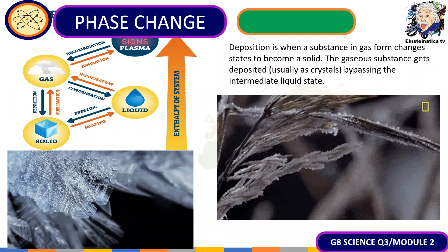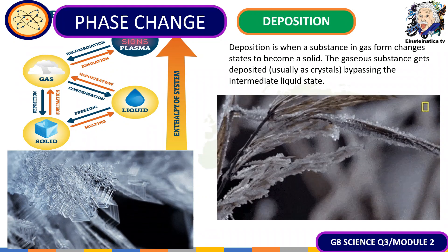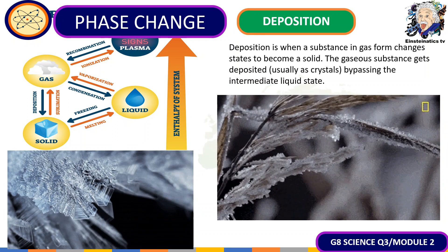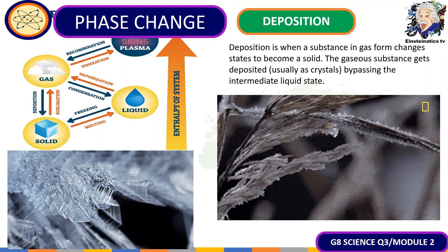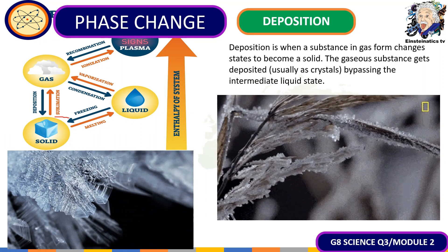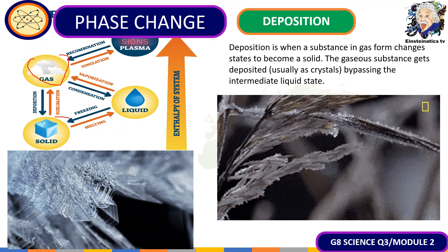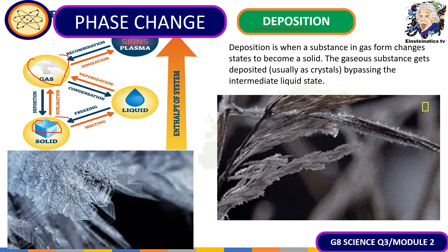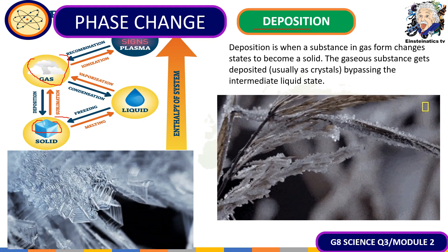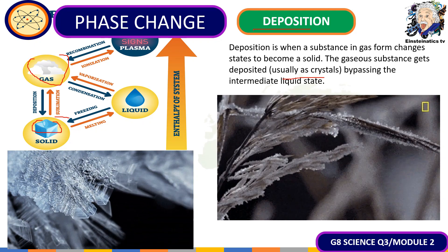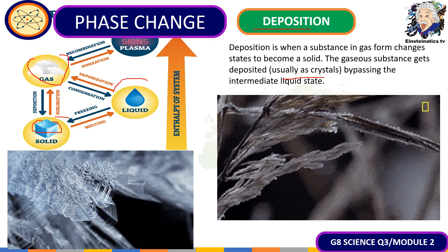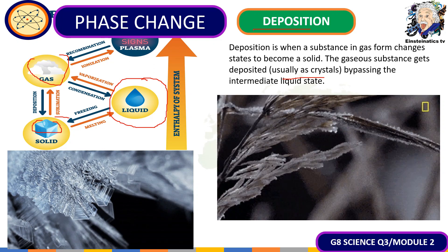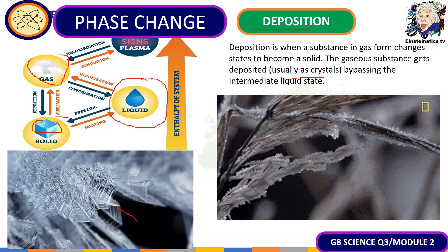The last phase change or physical change that matter undergoes is known as deposition. In sublimation, a solid turns directly into a gas. Deposition is the reverse: when a gas turns directly into a solid. One example of deposition is the forming of snow or ice crystals. It bypasses the liquid state entirely, going directly from gas to solid, as shown in the video.